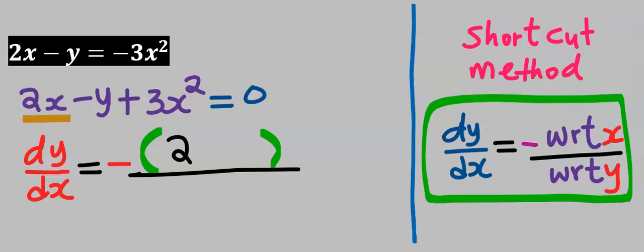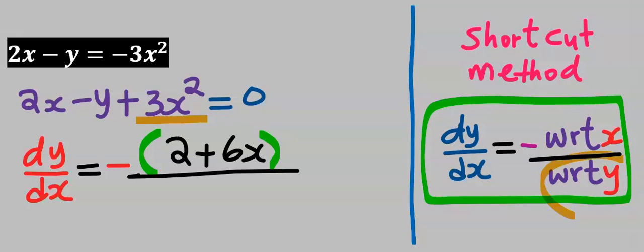And our answer is 2. Next, minus y got no x, hence I'm going to ignore it this time around for the numerator. Next, differentiate 3x squared and our answer is 6x. Next, at the denominator, we'll respect y only. That is, we're going to ignore 2x this time around and differentiate minus y, and our answer is minus 1.